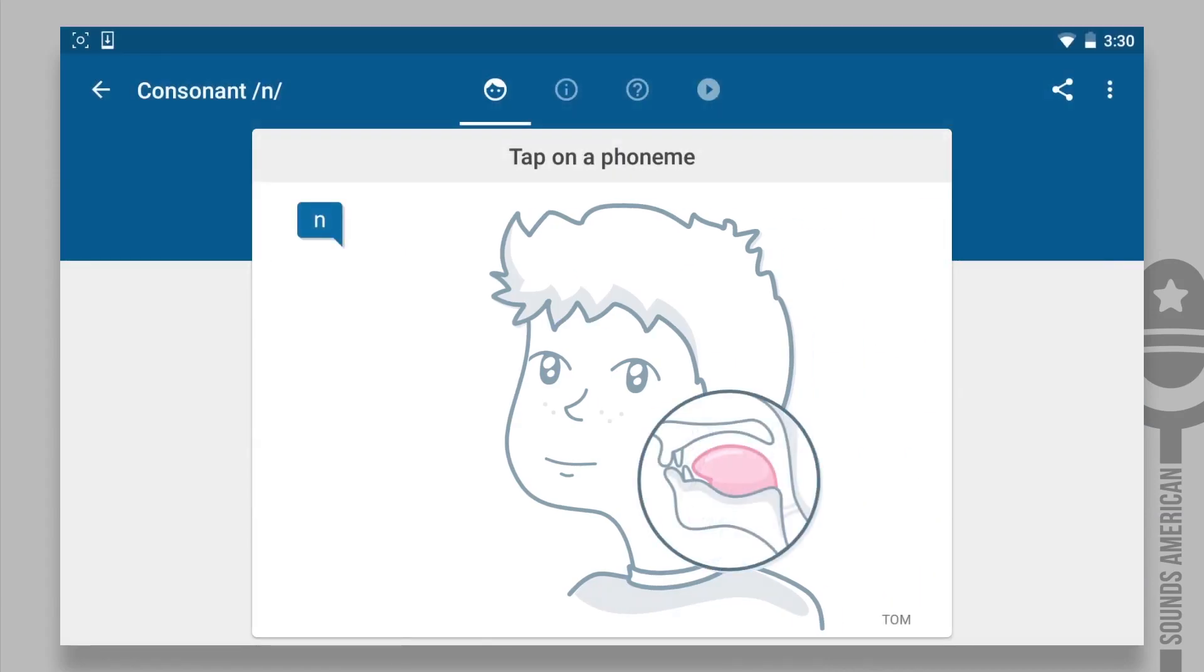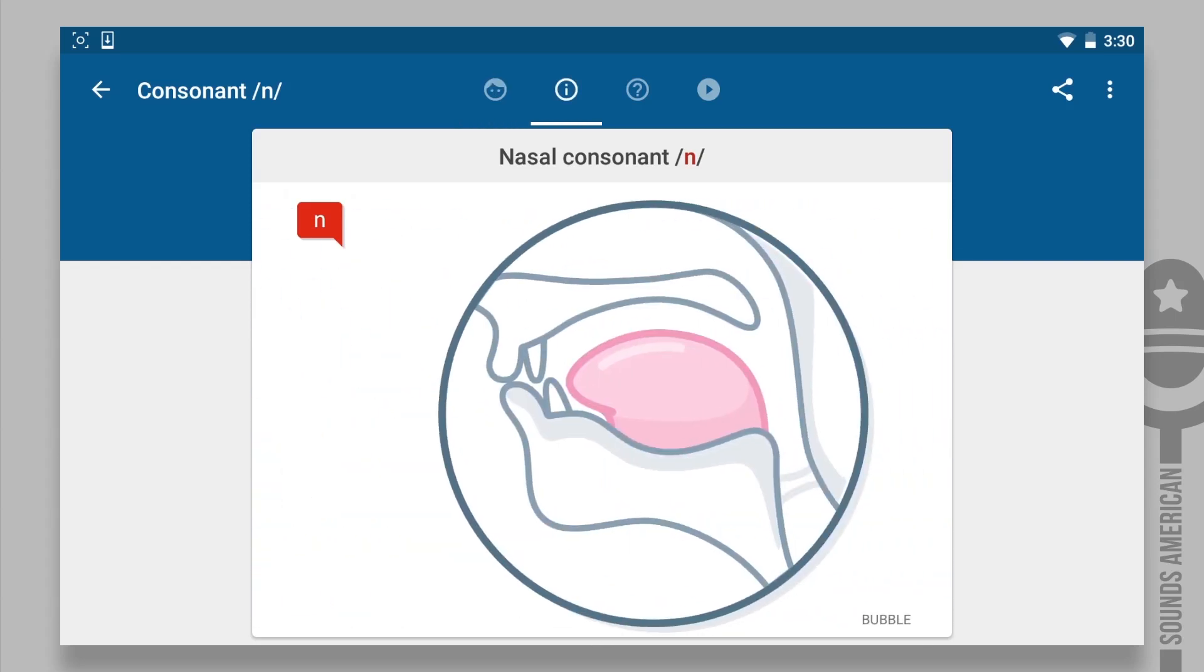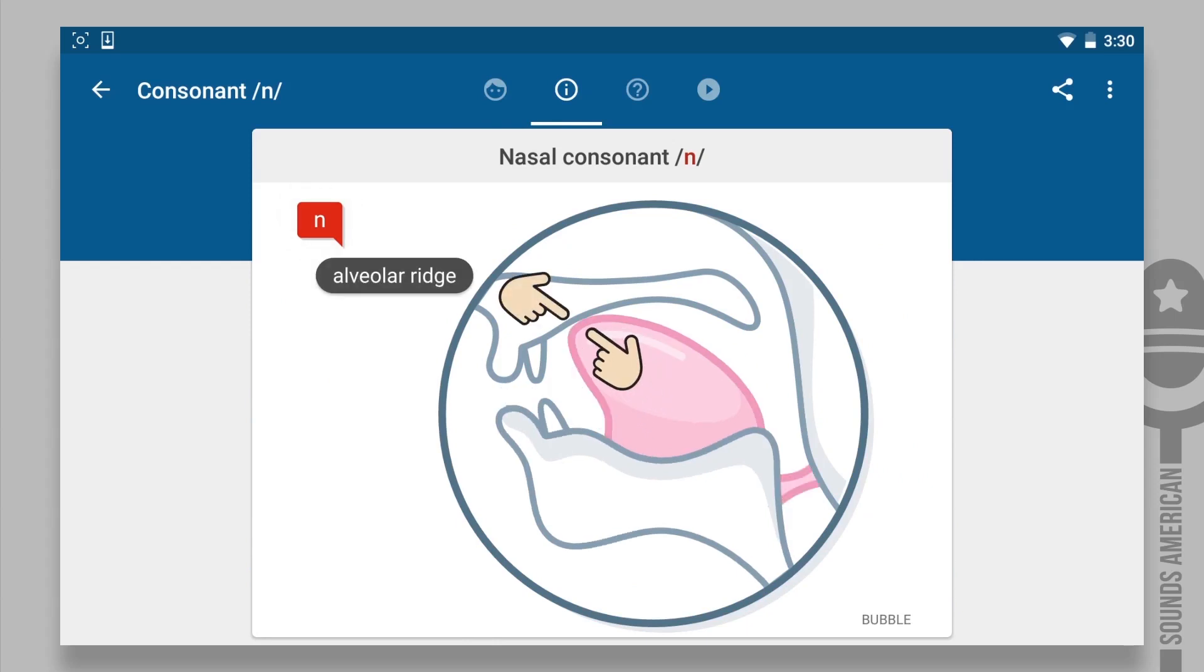To make the n sound correctly, it's important to focus on passing the air through your nose. Let's take a closer look at how to do that. Place the tip of your tongue on the alveolar ridge, behind your upper front teeth. Next, stop the air in your mouth with the tip of your tongue, and direct it into your nose.